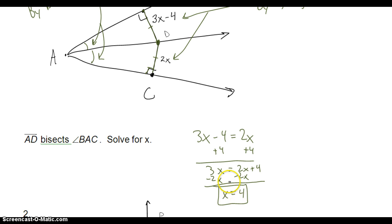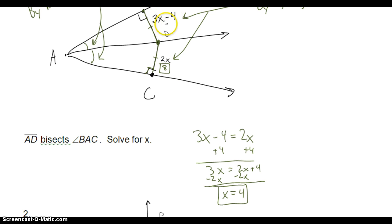If I plug 4 back in, this length is going to be 2 times 4, which is 8. And if I plug x back in here, I have 3 times 4, which is 12, and 12 minus 4 gives me 8. When I plug that x back in, both of these segments are the same length.